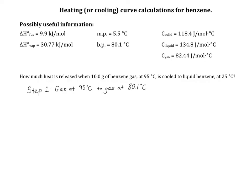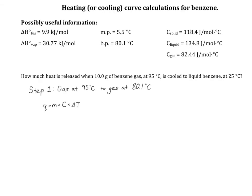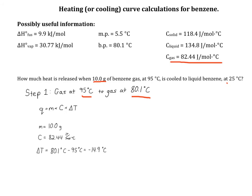Step one takes gas at 95 degrees C to gas at 80.1 degrees C. Because the temperature is changing, we'll use Q equals M times C times delta T. We're given the mass of benzene gas in the problem, and we know the specific heat capacity of the gas as well. We can find the delta T from the temperature change from 95 degrees C to 80.1 degrees C.